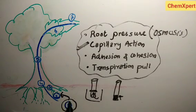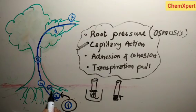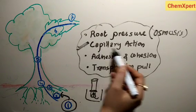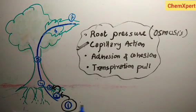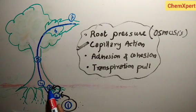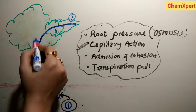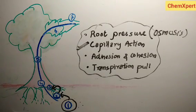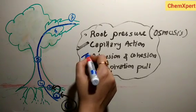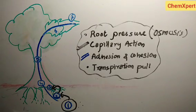Summarizing the path: water moves from the soil to root hairs, from root hairs to the base of the stem through capillary action and root pressure, and from the base of the stem into the xylem component formed by tracheids and xylem vessels. The water then rises within the xylem because of adhesion and cohesion forces.